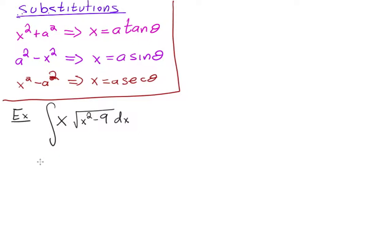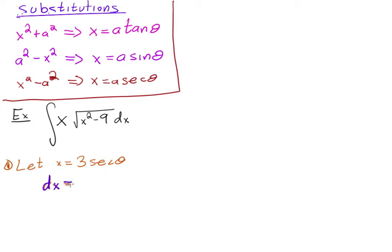It's the third case because it's x² minus a number. So we let x equal to 3 secant theta. Then dx is equal to 3 secant theta tangent theta dθ.